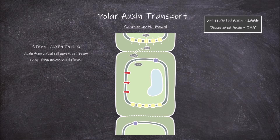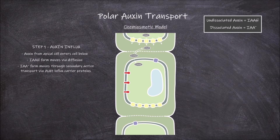Auxin in the dissociated form is negatively charged and unable to move freely across the membrane. Auxin in this form is able to move into the cell through secondary active transport via the auxin influx carrier proteins. These are symporter proteins that move the dissociated auxin across whilst carrying two hydrogen molecules across the membrane.